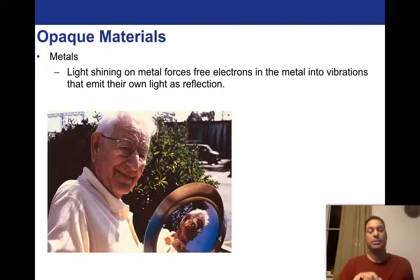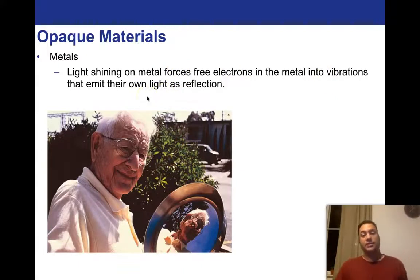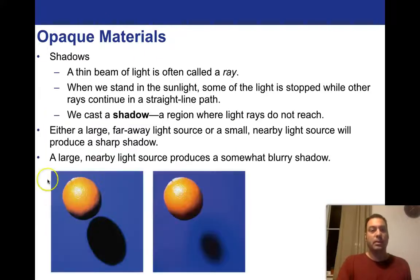But there are other kinds of opaque materials that we have to deal with all the time. For example, metals. You have light shining on a metal. Remember, metals typically have metallic bonds, which has a lot of free electrons working through the lattice. This is really great for conductors. But these metal forces free electrons of the metal into vibrations that emit their own light as reflection. They're so free that if it's hit by blue, it emits blue. If it's hit by red, it emits red. And so that actually gives you a nice reflection. Here's this gentleman looking into the bottom of a metallic object, and he's getting back his reflection that we can see in the photograph.